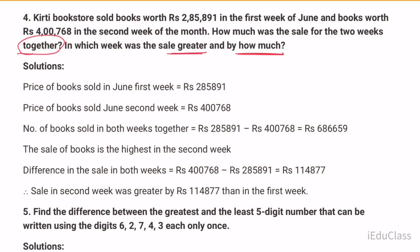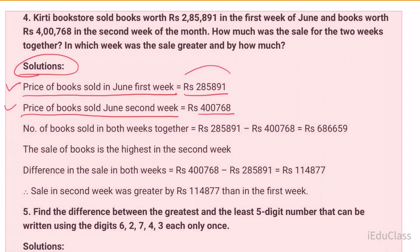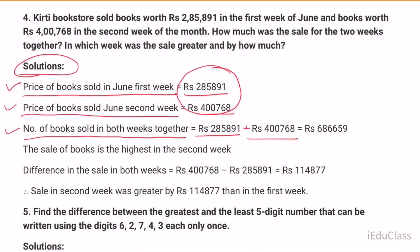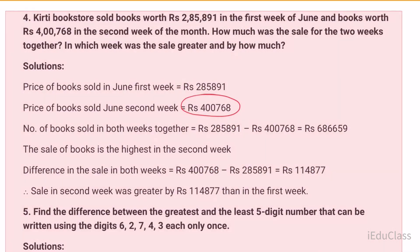Solution: Price of the books sold in first week is 285,891. Price of books sold in second week is 400,768. Number of books sold in both weeks together: 285,891 plus 400,768 equals 686,659. The sale of the books is highest in second week.